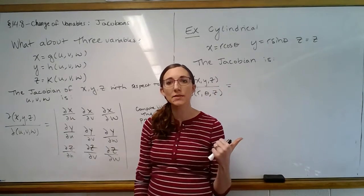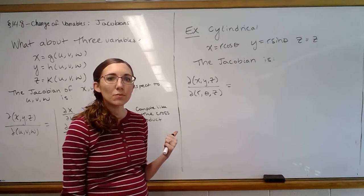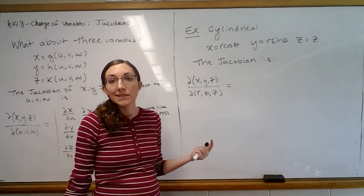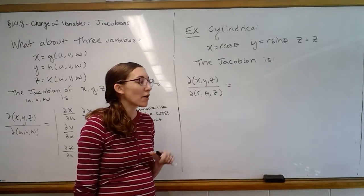So let's try it for cylindrical coordinates. With cylindrical, we've got x is r cosine theta, y is r sine theta, and z is z. So those are our functions.